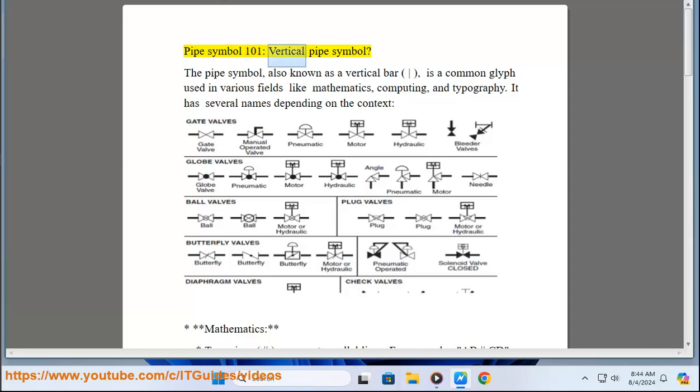Pipe Symbol 101: Vertical Pipe Symbol. The pipe symbol, also known as a vertical bar, is a common glyph used in various fields like mathematics, computing, and typography. It has several names depending on the context.